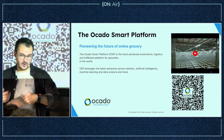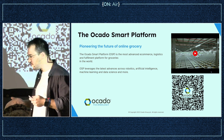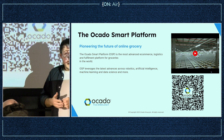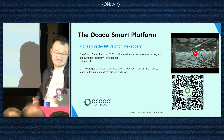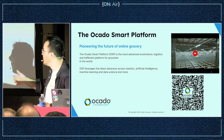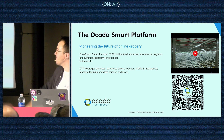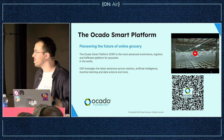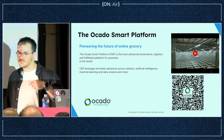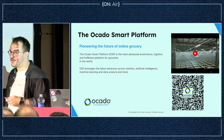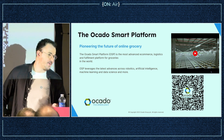This whole ecosystem of e-commerce, CFCs, and logistics is what we call the Ocado Smart Platform, and we are currently selling it to big supermarket chains all over the world. This is growing more and more, especially after the pandemic, where there was a huge increase. It's an interesting business full of challenges. We have an office in Barcelona — feel free to check it out.